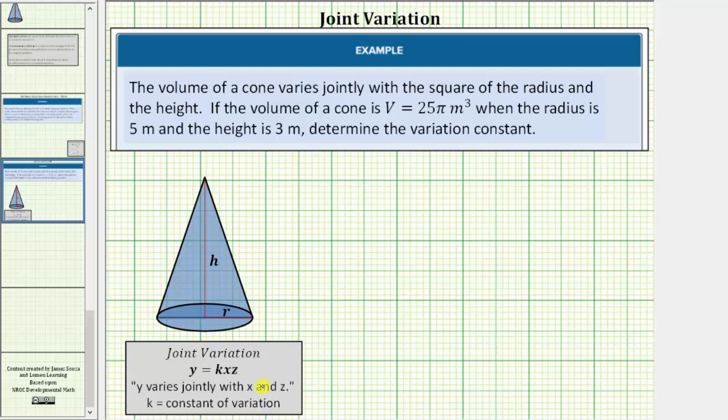So let's write the variation equation from the given information. Again, we're given the volume varies jointly, so we have V equals the variation constant k, and then it varies jointly with the square of the radius and the height, so we have times r squared times h. This is the joint variation equation for the volume of a cone.